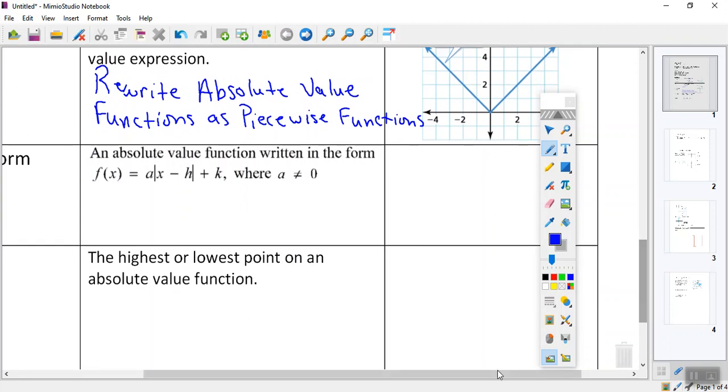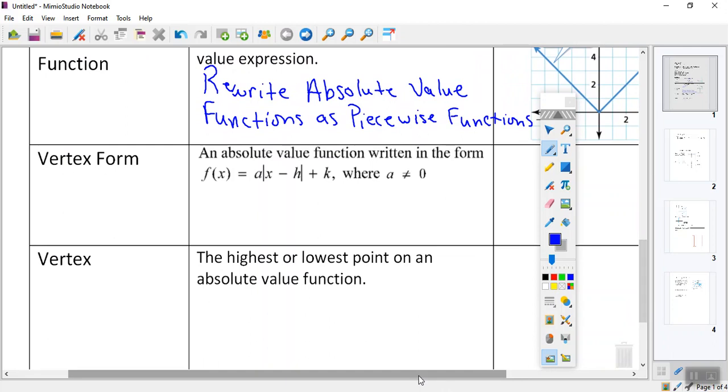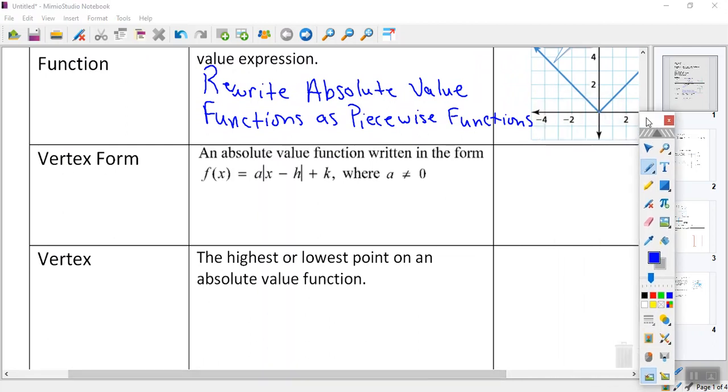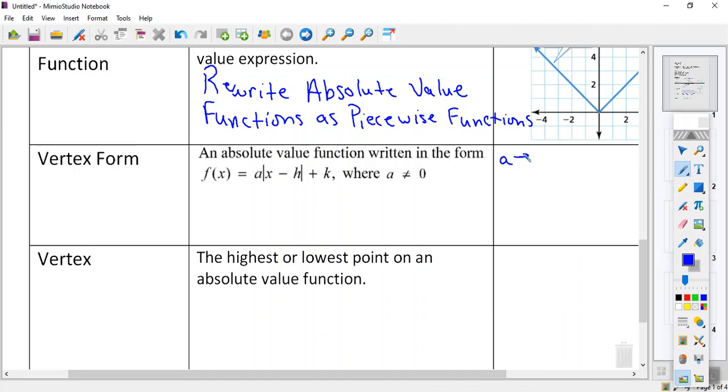You know these last two terms are kind of a review, vertex form. Let's just review here quickly. It's an absolute value function written in the form f of x equals A times the absolute value of x minus H plus K, where A cannot equal what, kids? And just a reminder, A is like the slope. H affects stuff left and right, and K is going to move stuff up or down, okay? So that's what you really need to remember from vertex form. What are the parameters, A, H, and K, or how do they affect that?